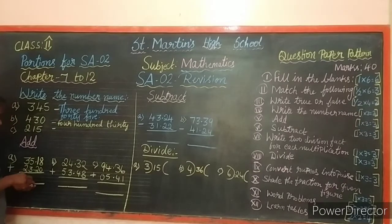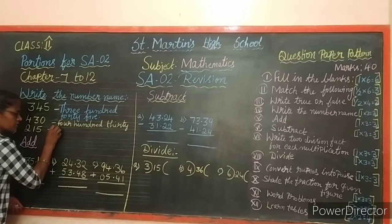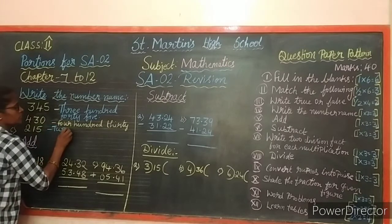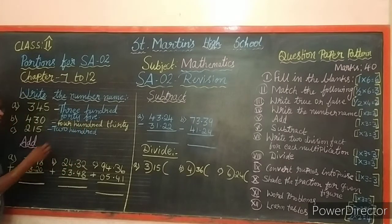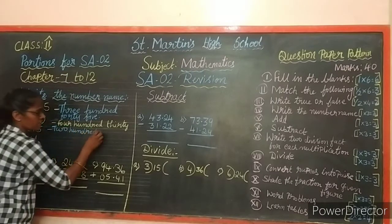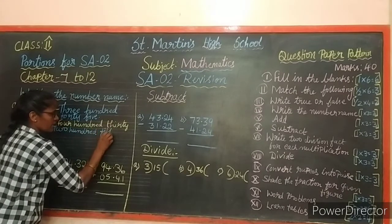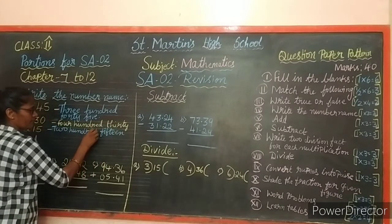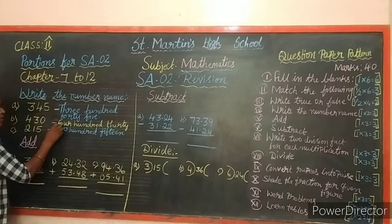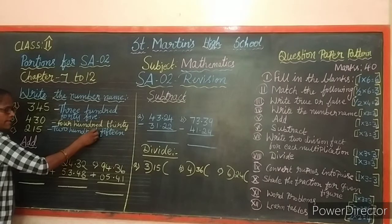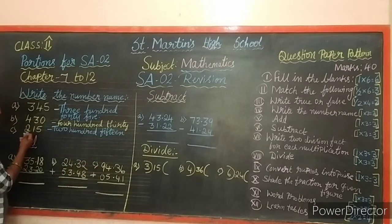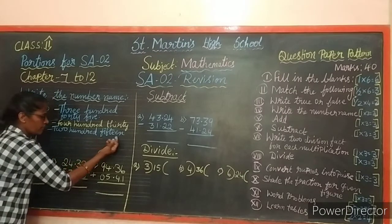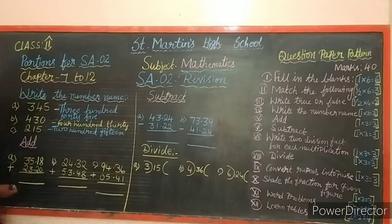The next number is 250. First take 2, that is 200 - Two Hundred. Then the tens and ones: 50 is Fifty. So 250 is written as Two Hundred and Fifty.